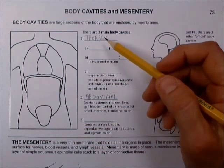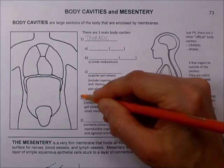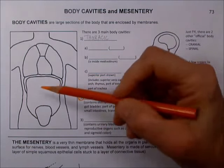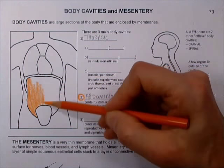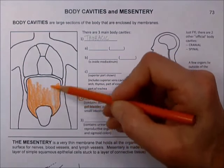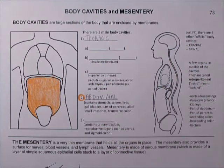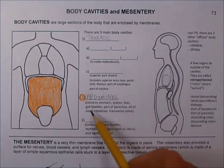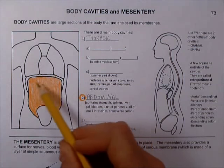We'll come back to the thoracic in just a minute. Let's go ahead and color the abdominal cavity. For these colors you can really use anything, as long as we make a note over here. Color this big space — nothing tricky, you don't have to shade or anything. In the abdominal you will find stomach, spleen, liver, gallbladder, part of the pancreas, all of the small intestines, and the transverse colon — that's the one that goes across.